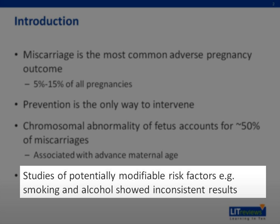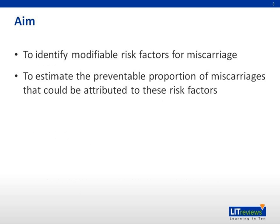Studies of potentially modifiable risk factors, for example smoking and alcohol, have shown inconsistent results. The aim of this study is to identify modifiable risk factors for miscarriage and to estimate the preventable proportion of miscarriages that could have been attributed to these risk factors.